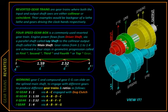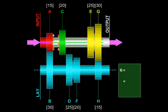Here we are going to look at a commonly used type of gear train called the reverted gear train, where the input and output shafts are collinear or even coincident and the power is transmitted from input to output via a third shaft which is parallel to them both.